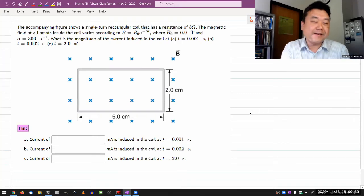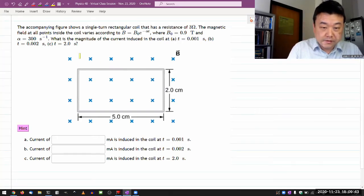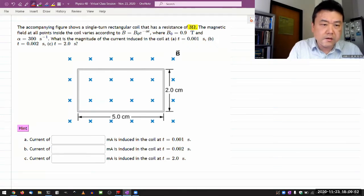Okay, so let me get started here. The accompanying figure shows a single turn rectangular coil that has resistance. This seems significant, so I'm going to assign it a letter, some resistance.